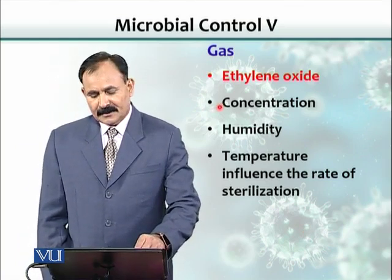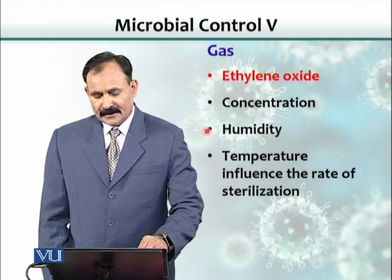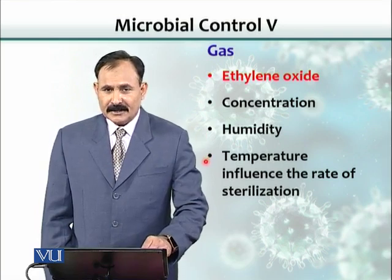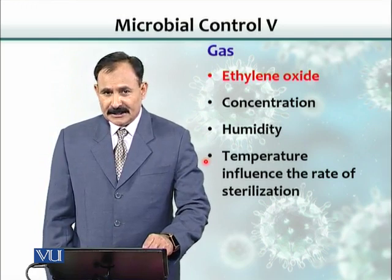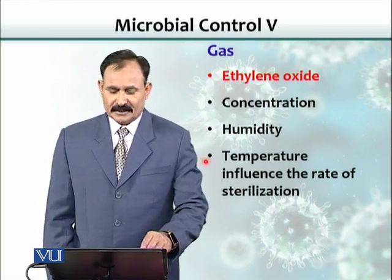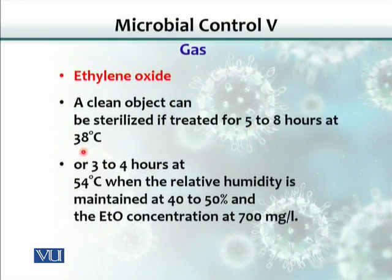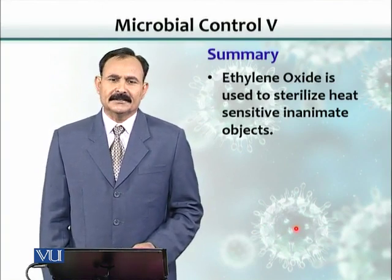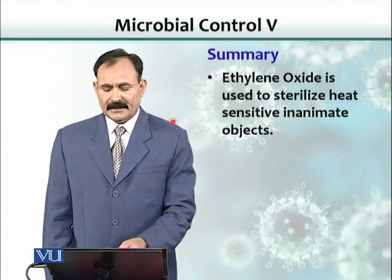There has to be a certain concentration of this gas, and it has been noted that some humidity and moisture is also needed, along with a specific temperature, for achieving complete sterilization. Time required is 5 to 8 hours at 38°C, or this can be reduced to 3 to 4 hours if the temperature is increased to 54°C. Humidity must be between 40 to 50%, and the concentration used is typically 700 milligrams per liter. In summary, physical solid objects that are heat-sensitive can be sterilized by ethylene oxide.